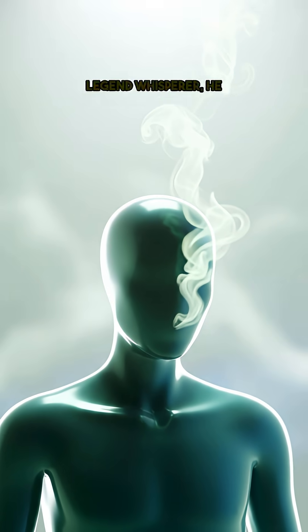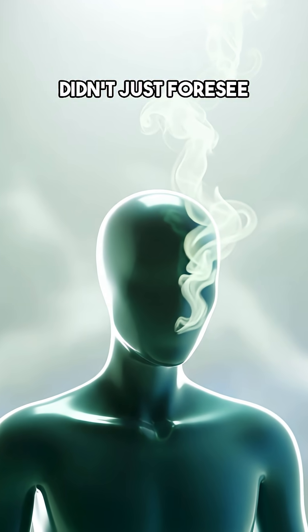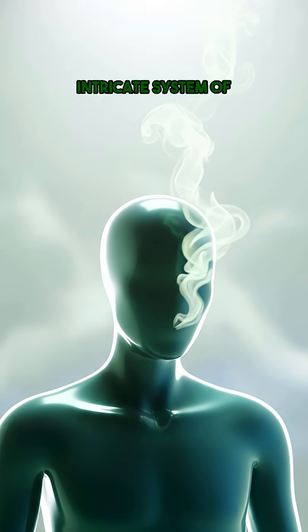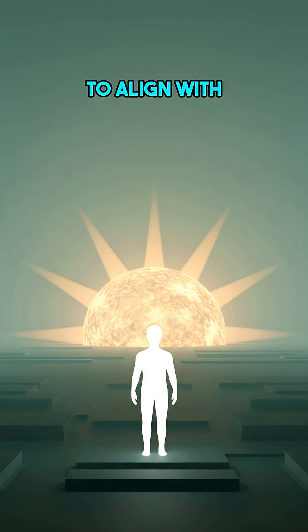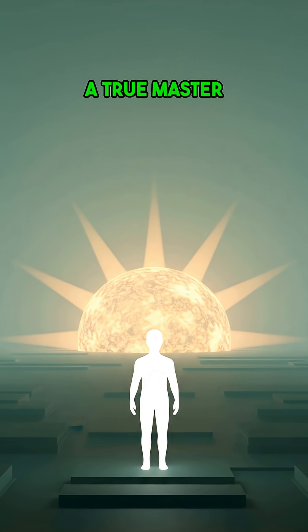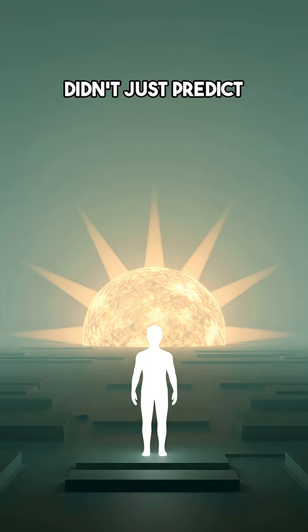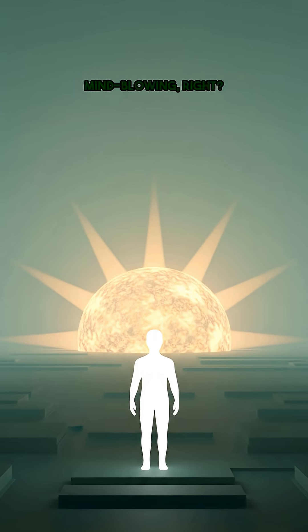Wait, it gets even crazier. Legend whispers he didn't just foresee death. He used an intricate system of celestial mechanics and advanced numerology to align with his chosen departure. A true master of numbers who didn't just predict his destiny, but orchestrated it. Mind-blowing, right?